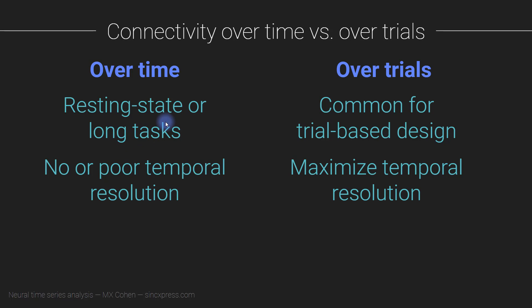For example, let's say you're doing a memory task where you show participants a picture, they're supposed to remember it, and then nothing is happening for, say, 10 seconds — they're just keeping that picture in working memory. In that case, you might also compute connectivity over time. The downside and limitation of computing connectivity over time is that you have no temporal resolution, or poor temporal resolution.